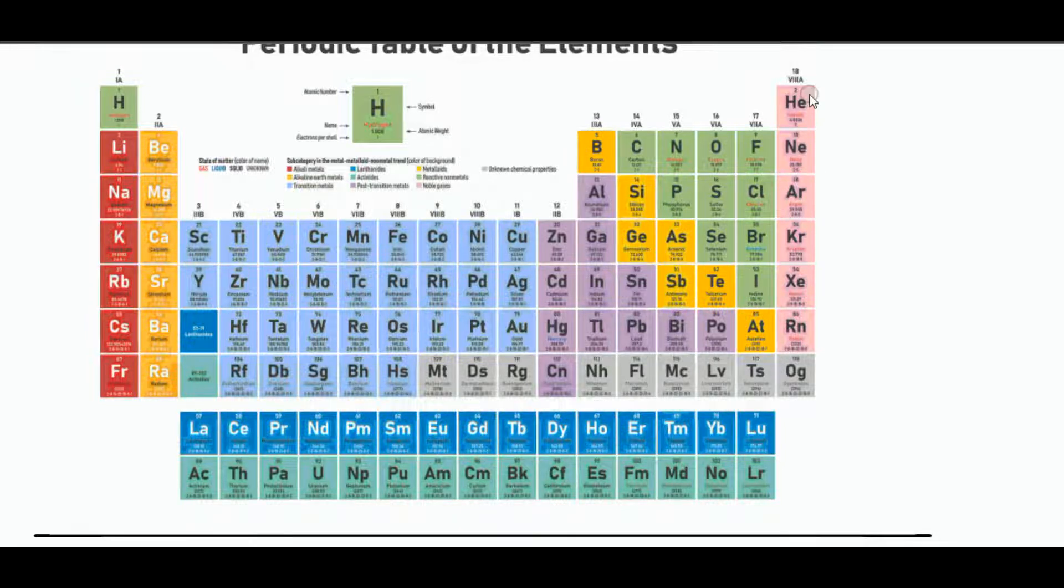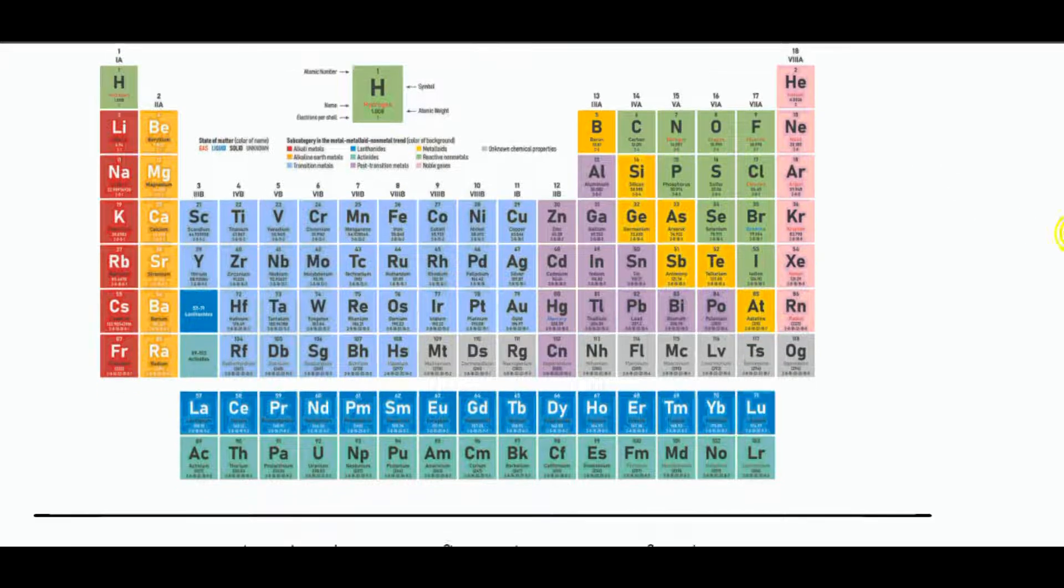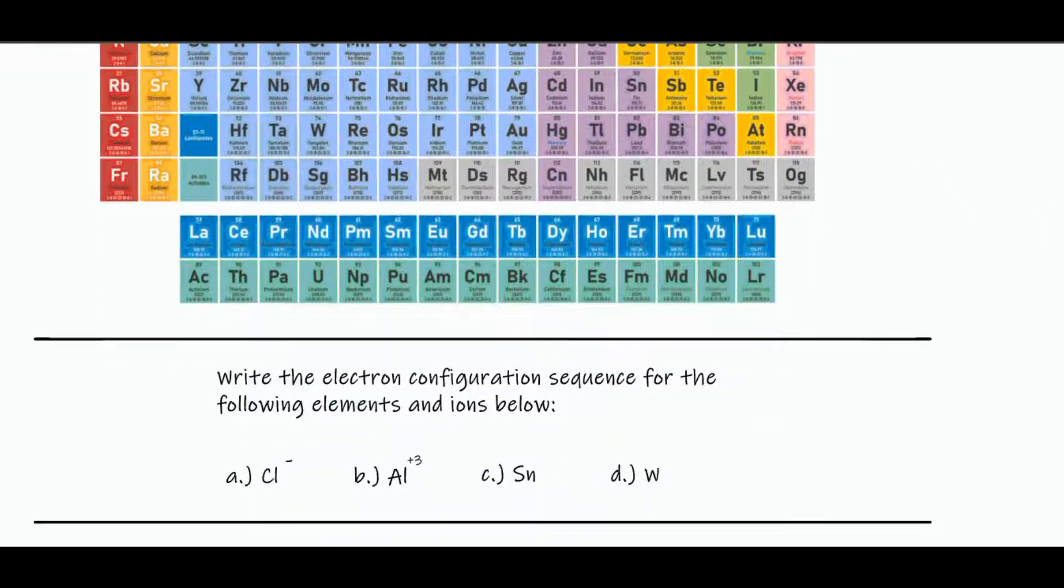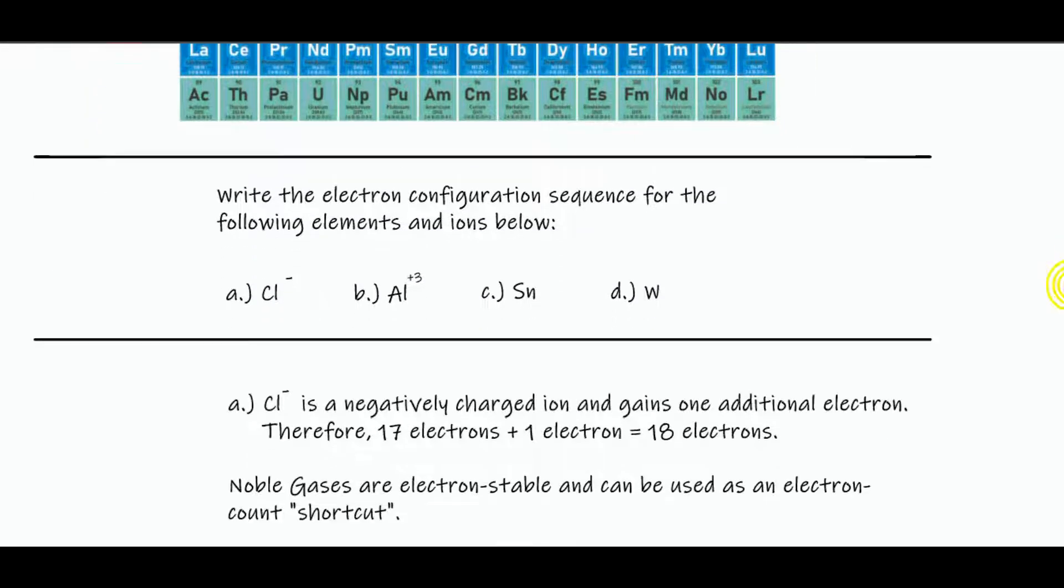So you could always start with the noble gases because they are electron stable. So if you were writing the electronic configuration for tin, you could start with krypton and then populate the remaining electrons. So 14 more to go to tin. You could do that, but you still have to write out the order so you know which orbitals and electrons come after the noble gases.